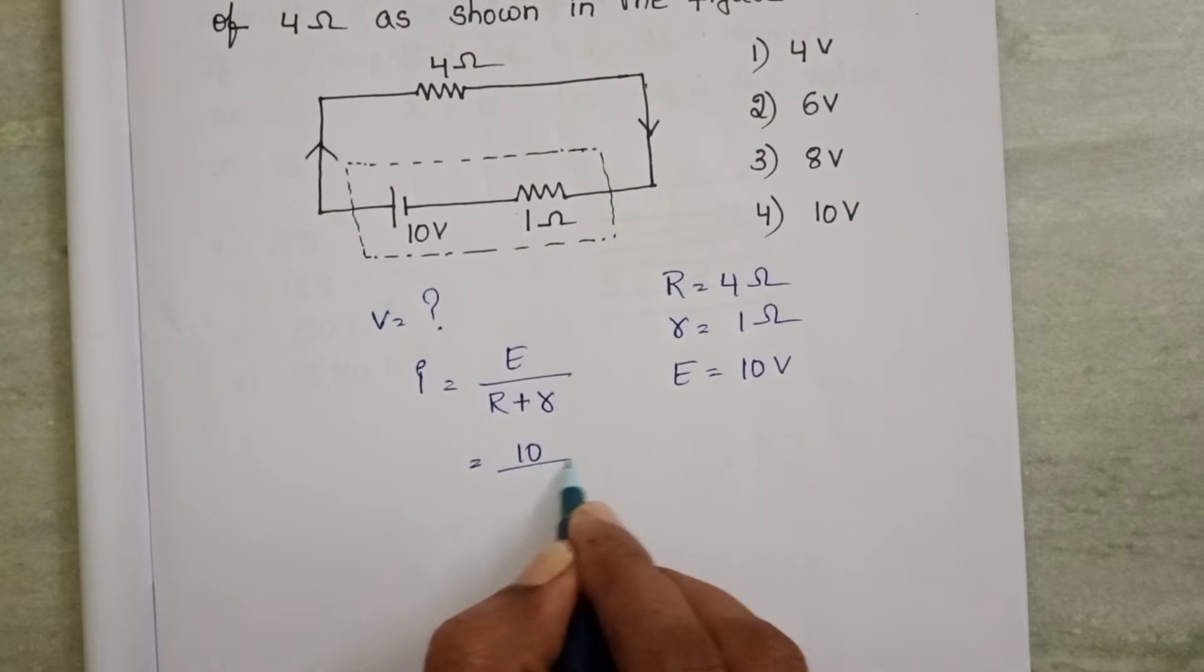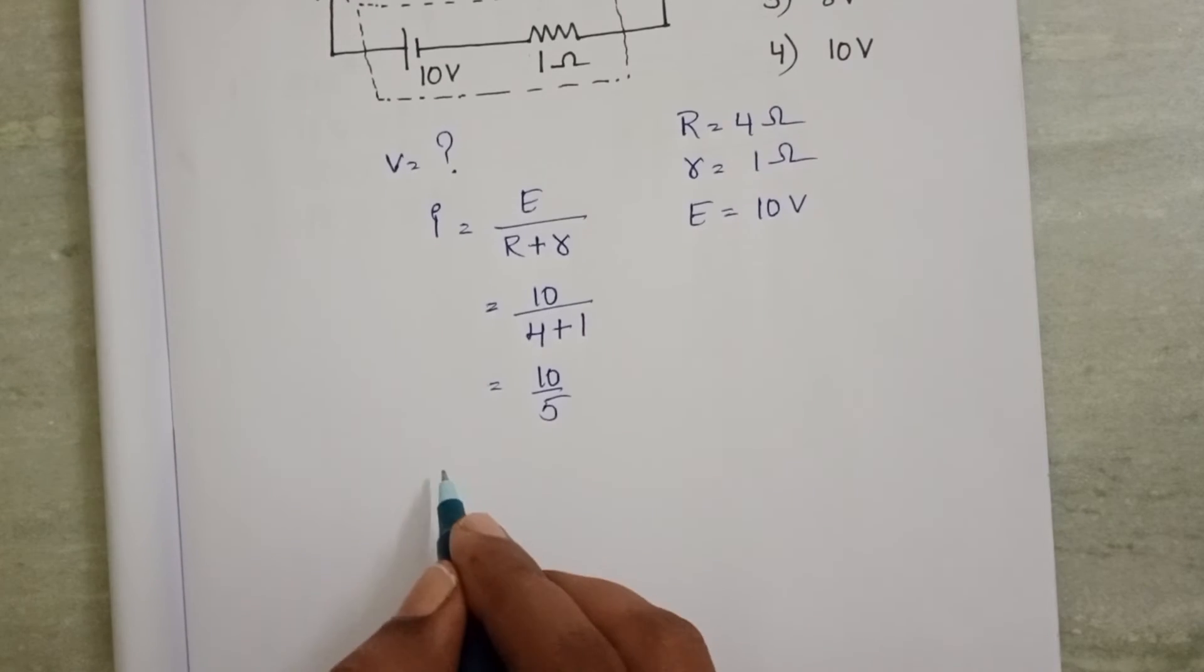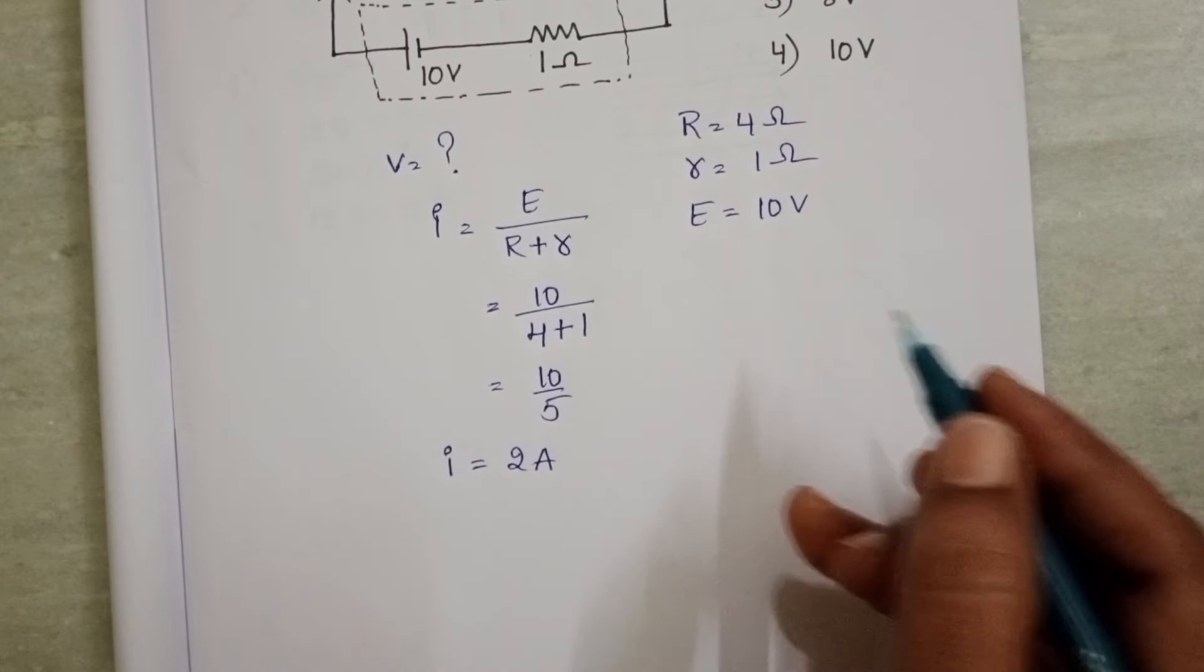EMF is 10V, external resistance is 4Ω and internal resistance is 1Ω. 10 by 5, current passing through the circuit equals 2A.